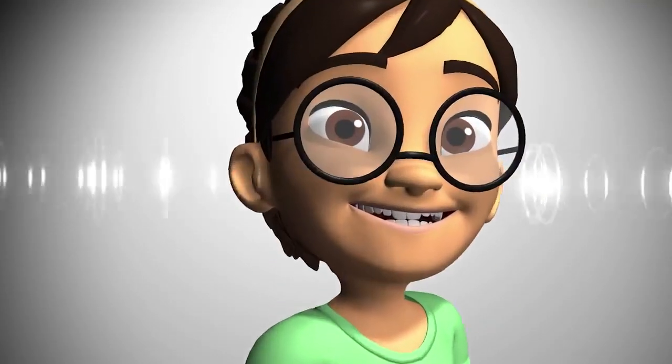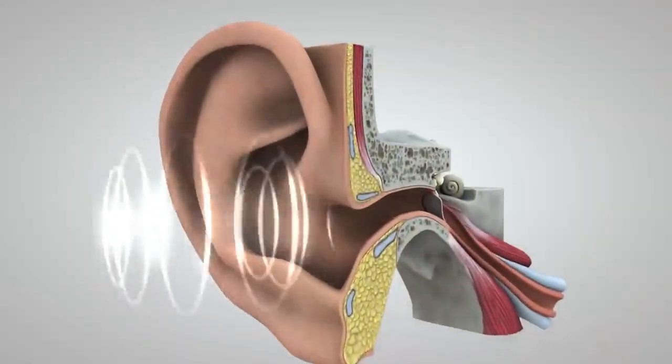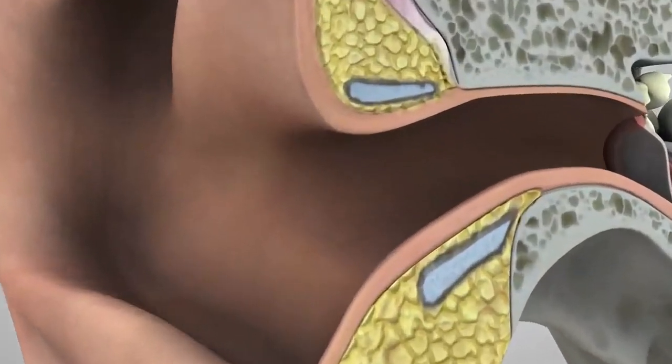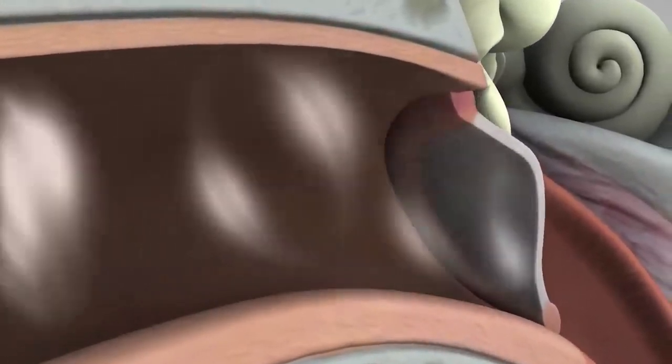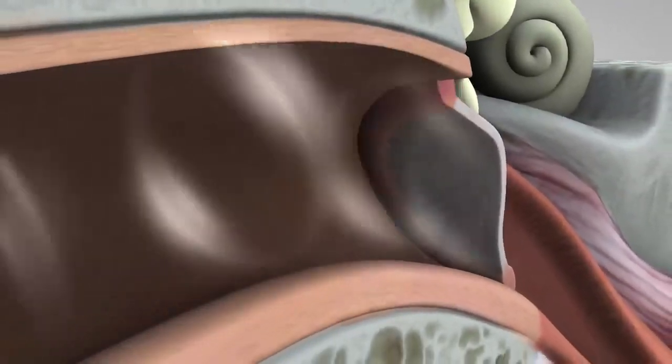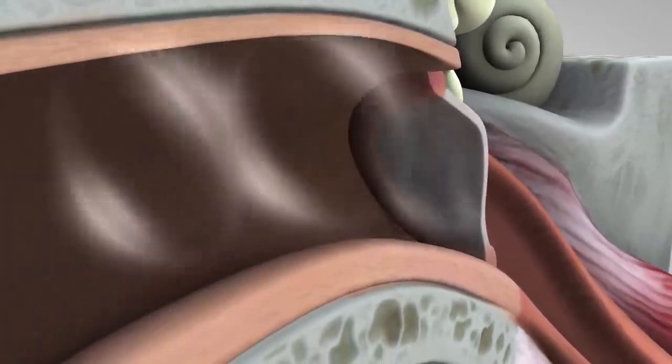The outer ear catches the waves, which then travel through a narrow passageway called the ear canal. The sound waves reach the eardrum, which is a membrane roughly half the size of a dime. They make the eardrum vibrate,